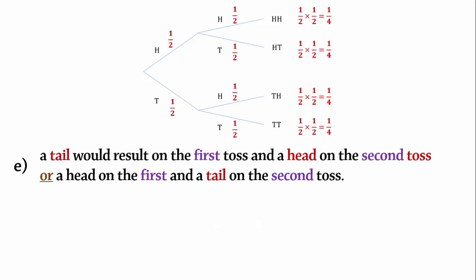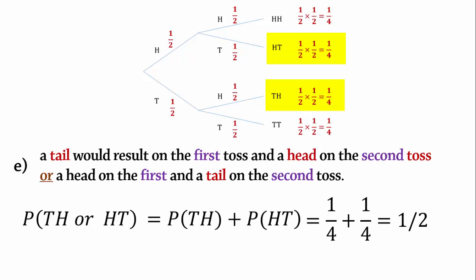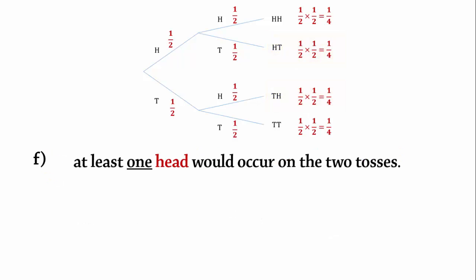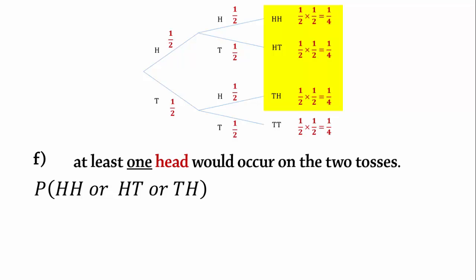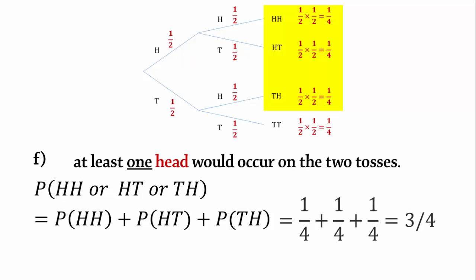Part E. What is the probability that a tail would result on the first toss and a head on the second toss, or a head on the first and a tail on the second toss? We need to calculate the probability of tail-head or head-tail. In probability, OR means add. That is, we add the probability of tail-head and head-tail, which gives 1/4 plus 1/4, or half. Part F. What is the probability that at least one head would occur on the two tosses? As seen on the tree, the possibilities are head-head, head-tail, or tail-head. Because of the OR, we add these three probabilities: 1/4 + 1/4 + 1/4, which equals 3/4.